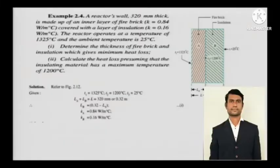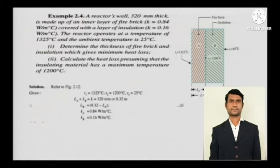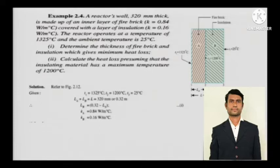A reactor's wall 320 mm thick is made up of an inner layer of firebrick where k equals 0.84 watts per meter degree Celsius, covered with a layer of insulation where k equals 0.16 watts per meter degree Celsius. The reactor operates at 1325 degrees Celsius and the ambient temperature is 25 degrees Celsius. Determine the thickness of the firebrick and the insulation which gives minimum heat loss, and calculate the heat loss presuming that the insulating material has a maximum temperature of 1200 degrees Celsius.